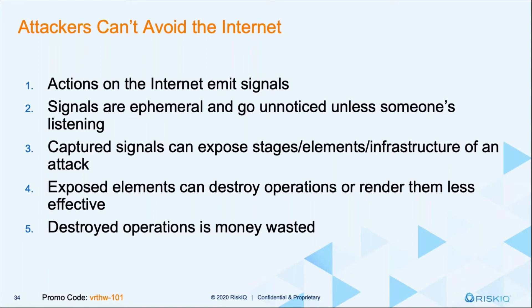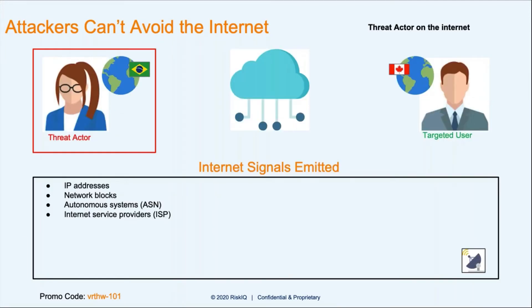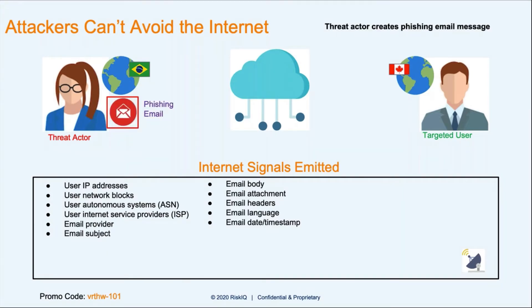The same thing happens with us. If you have a threat actor in Brazil attacking somebody in Canada, just for them to get on the Internet, there are signals out there — an IP address, a network block, the autonomous system number, their Internet service provider. When they create the phishing email, there'll be an email provider, a subject, a message body, a language, a date and timestamp. When the message gets sent, it has to travel through networks so we can see the transit times and addresses, the network blocks, and things like that. Then it gets to the user.